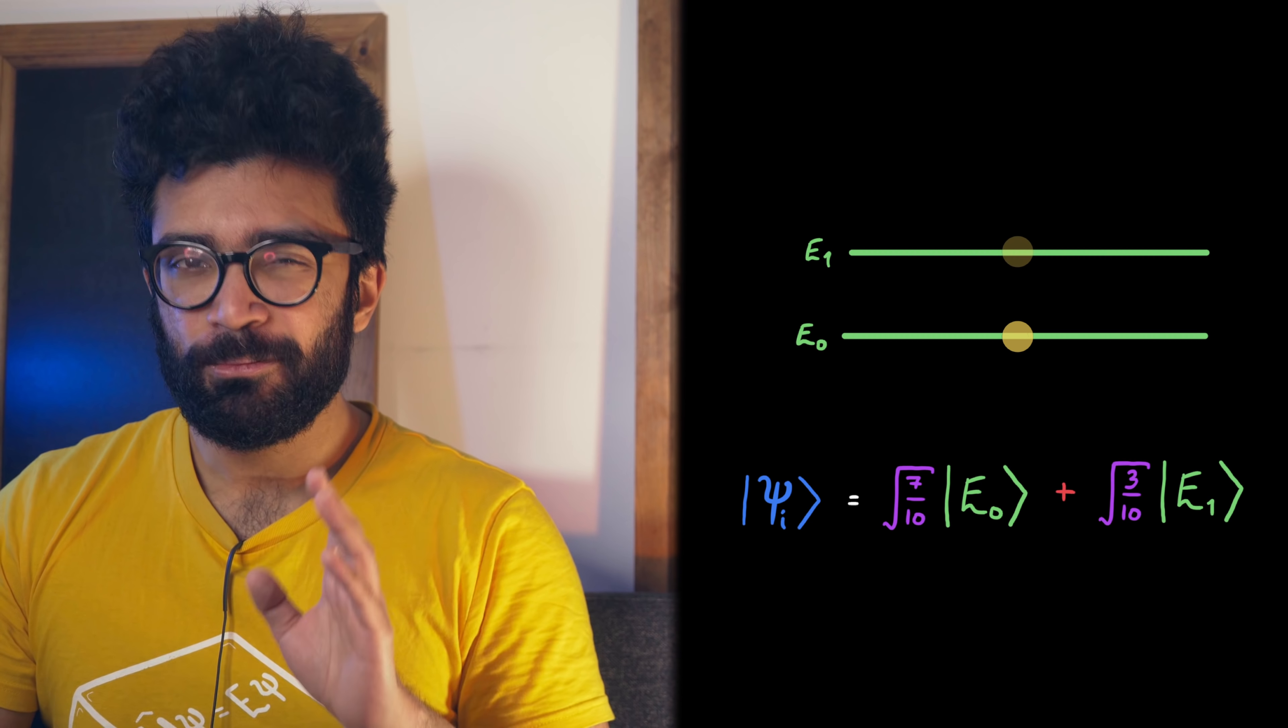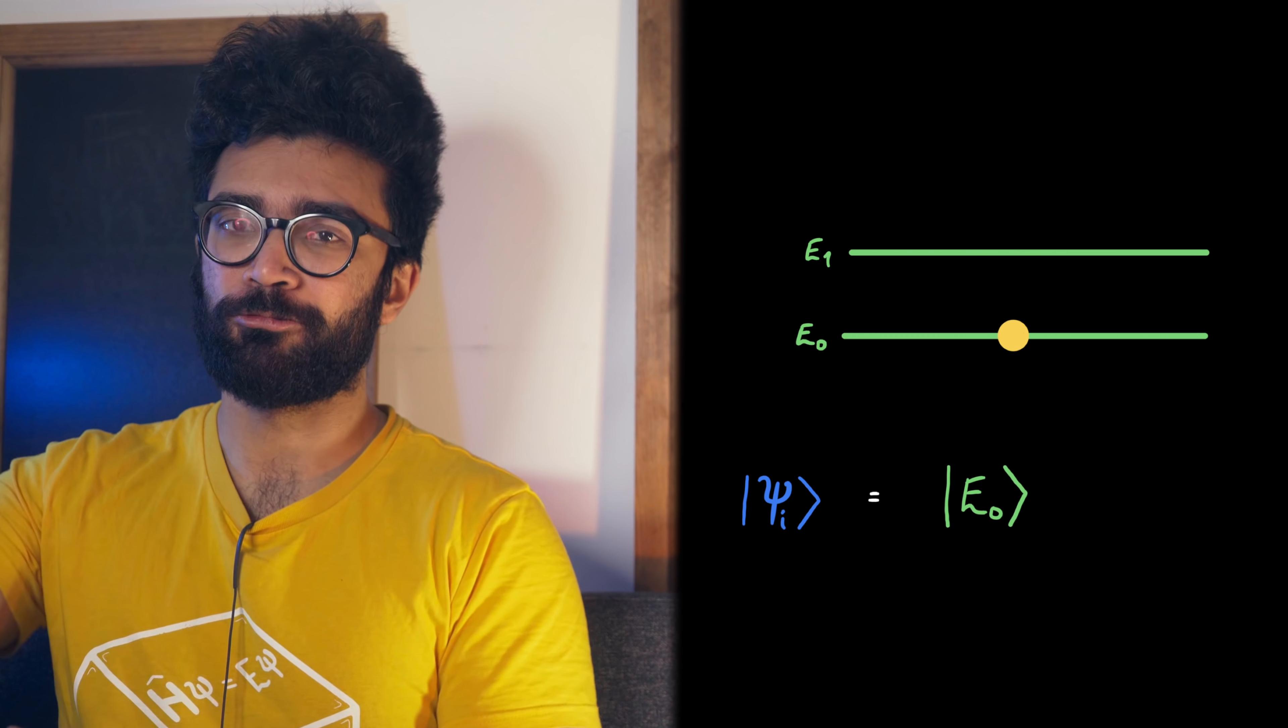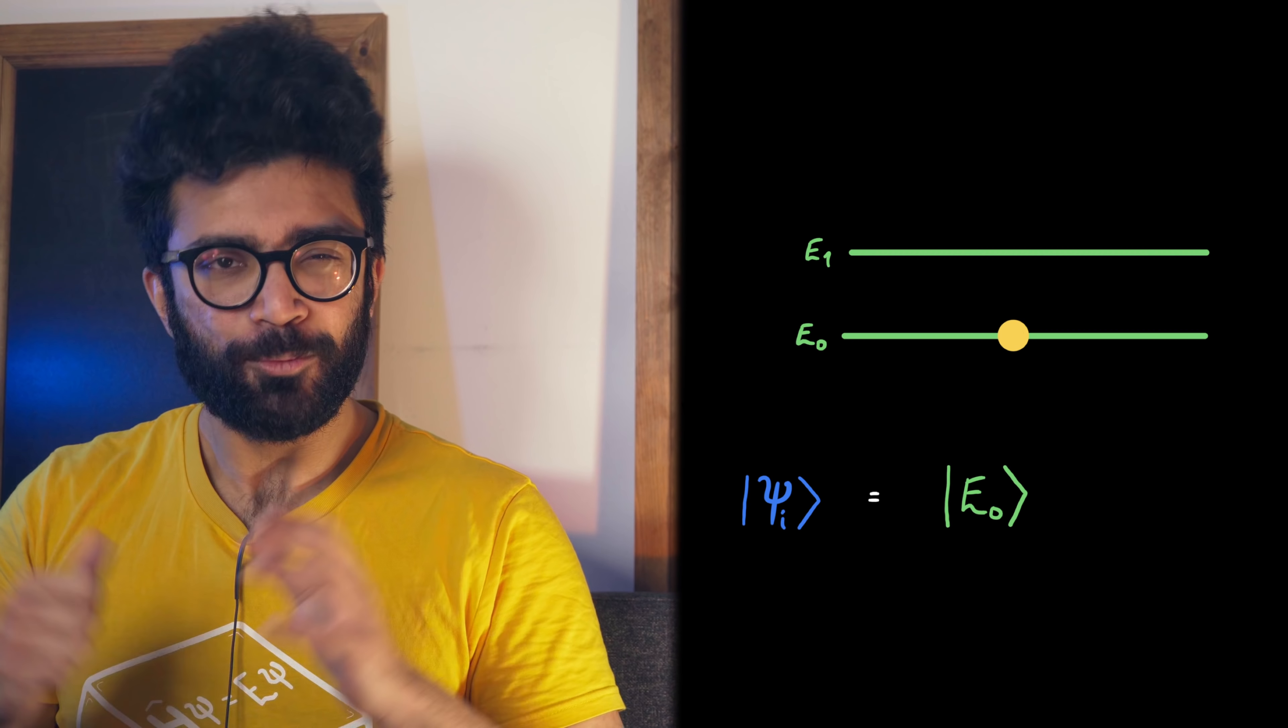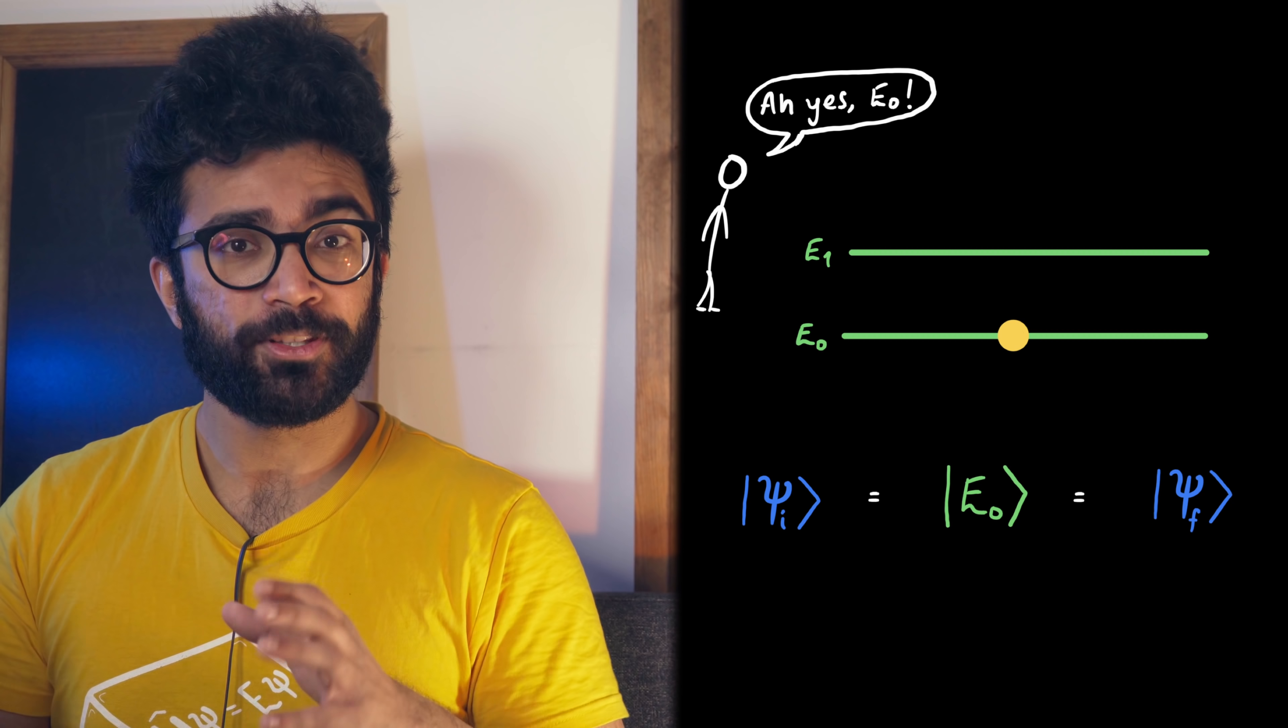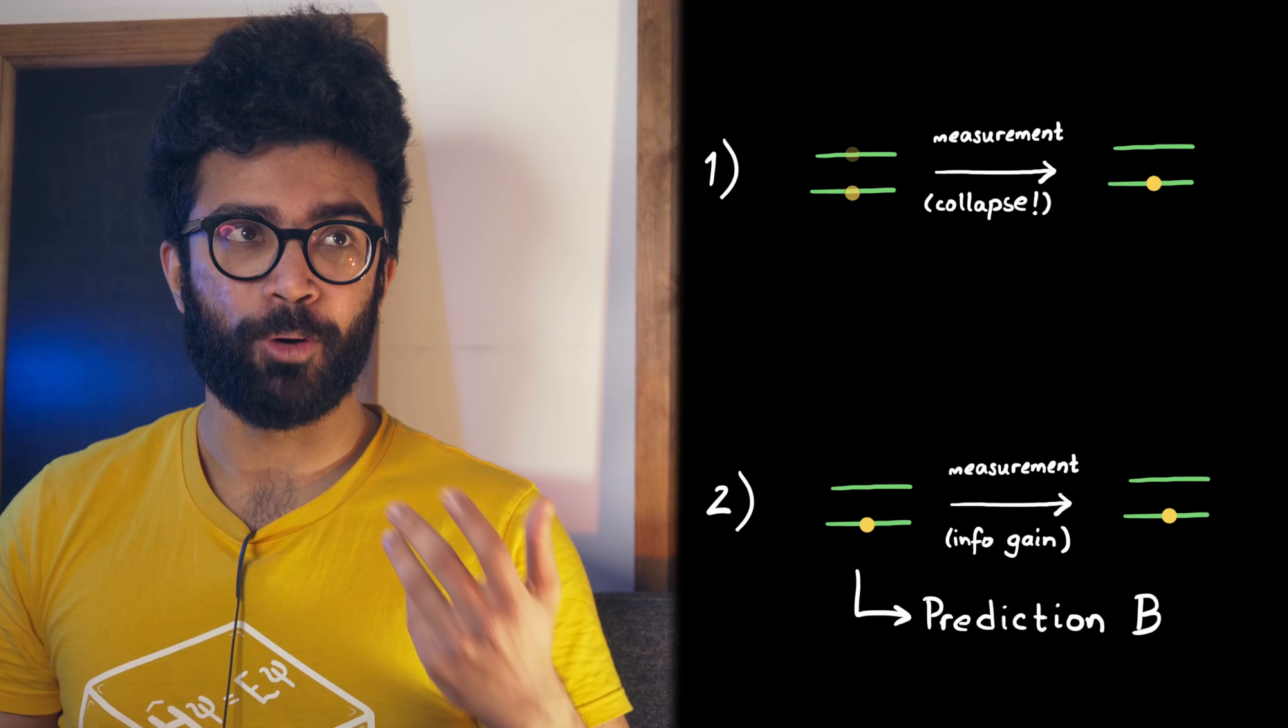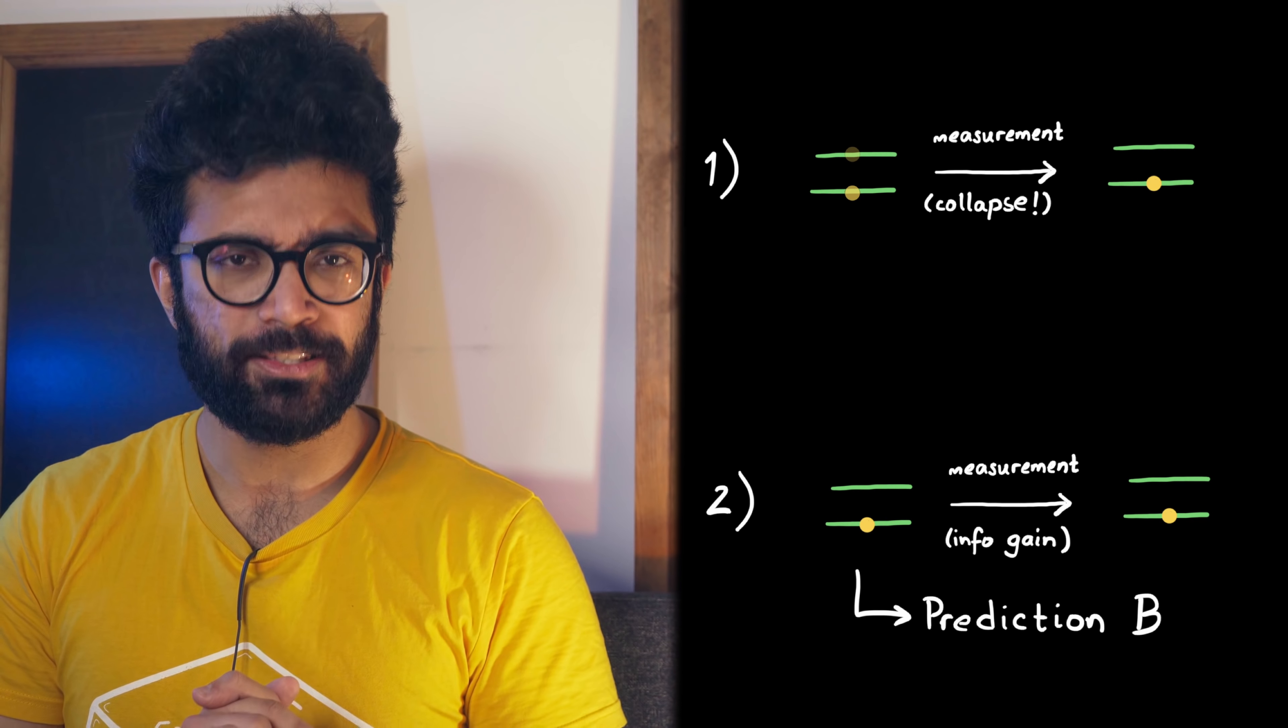Now, like I said, this sounds quite bizarre, and we might ask the question, how do we know that the system isn't already in a particular state, and we just find out which one it's in when we measure it? Well, that's because we can incorporate both of these ideas into our mathematical theory, and see where that leads us.